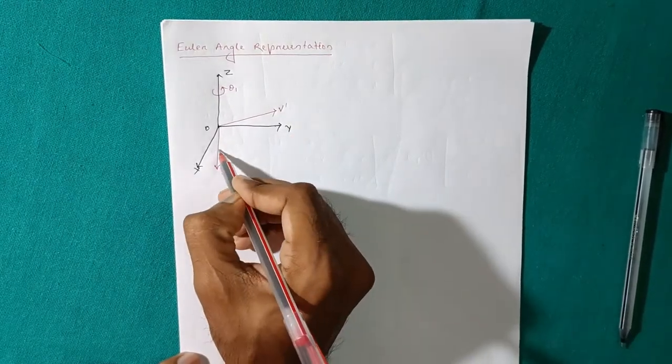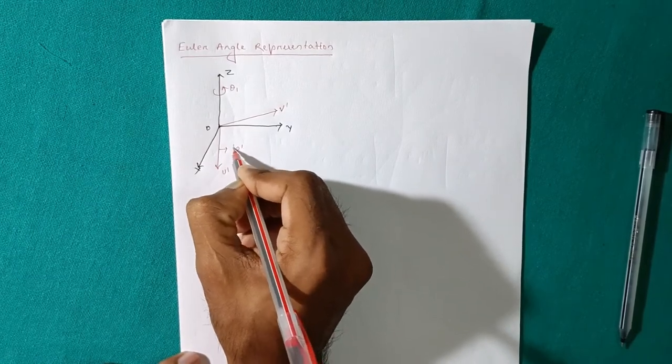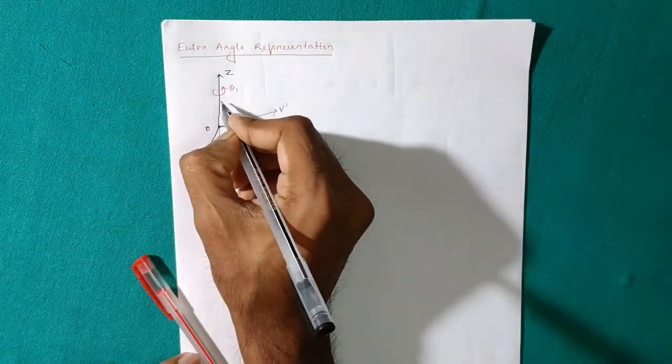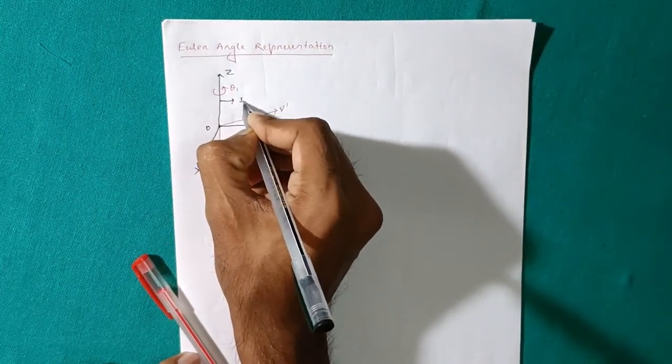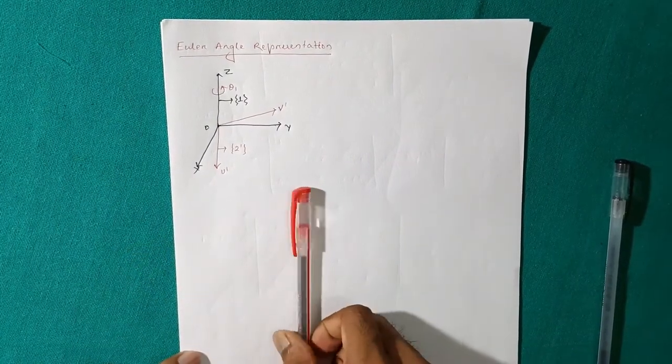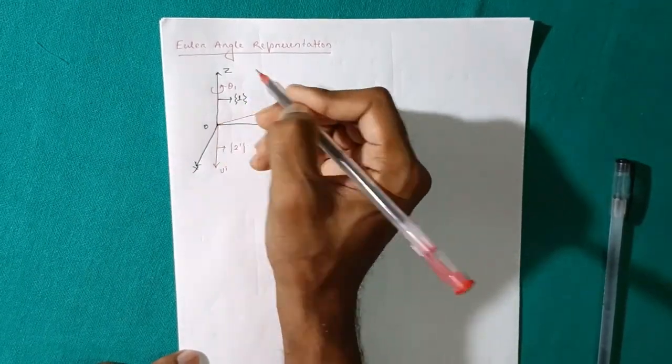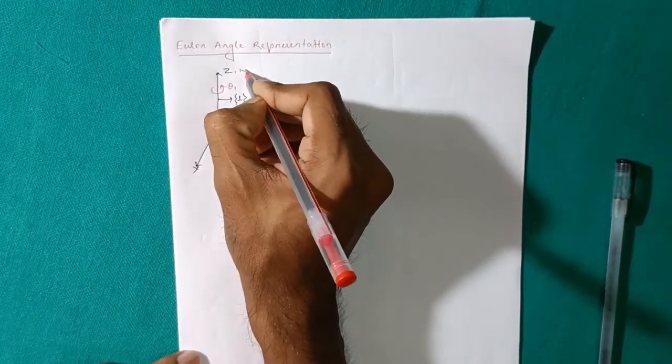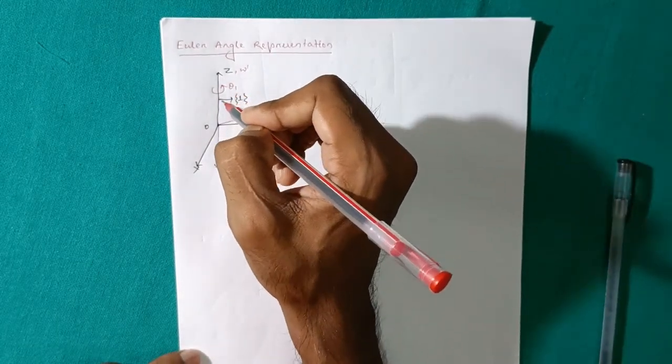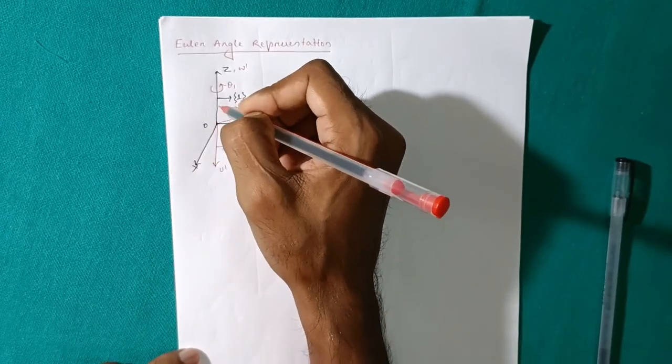So this frame, let us name it as 2 prime, and this one, the base frame, let us name it as 1. And the W1, this is W1. It will come on z-axis only because this is the fixed axis.